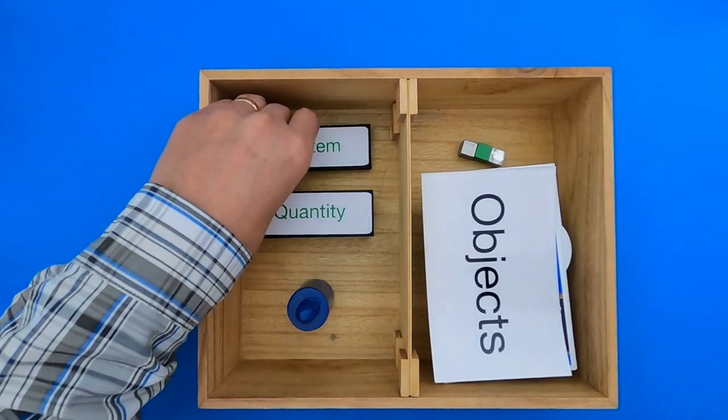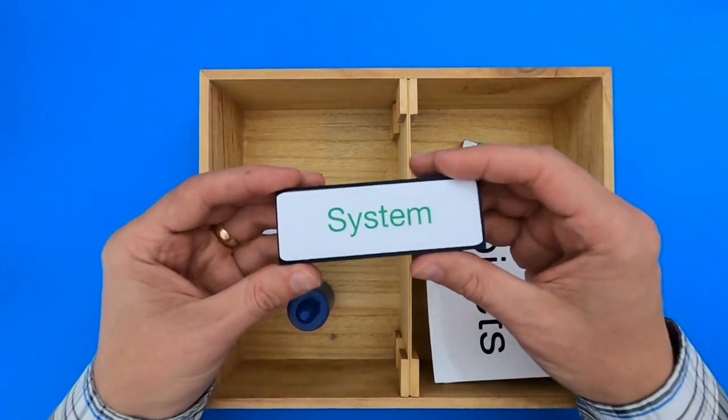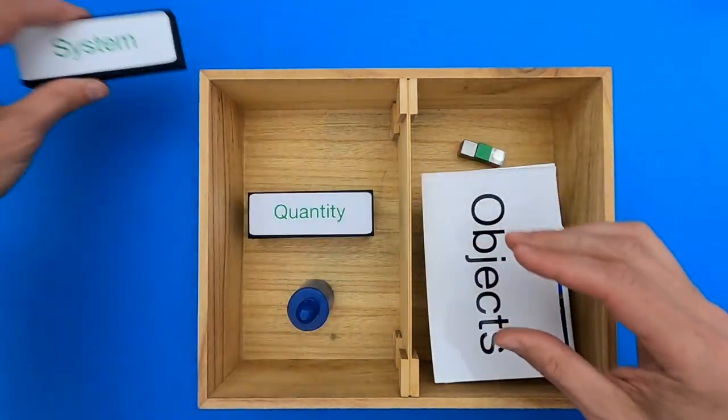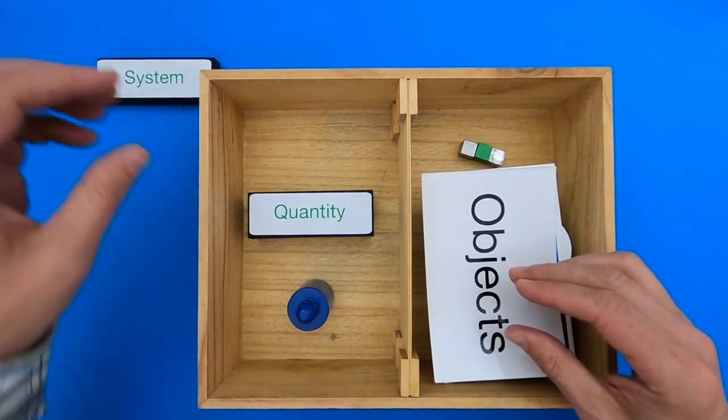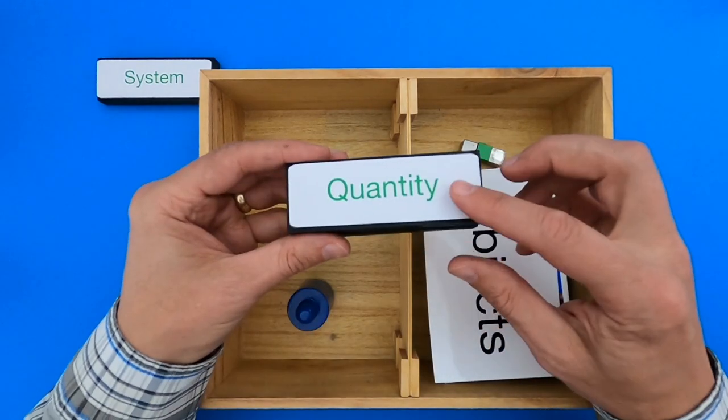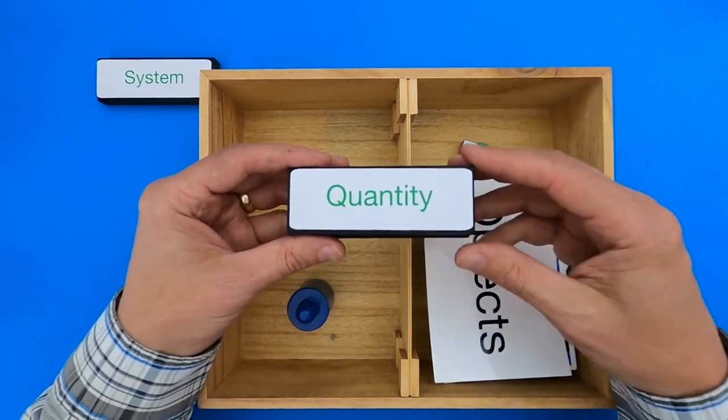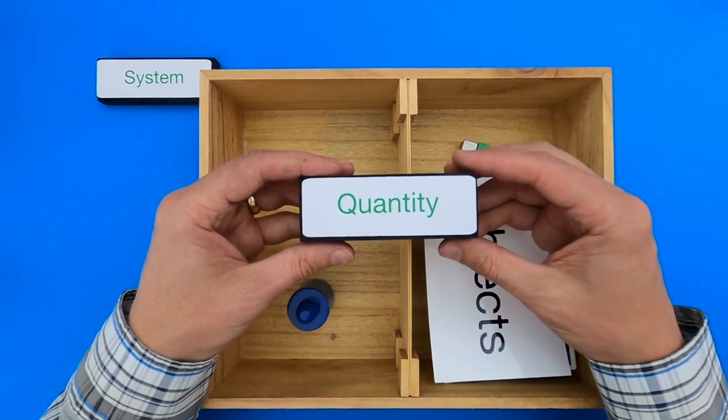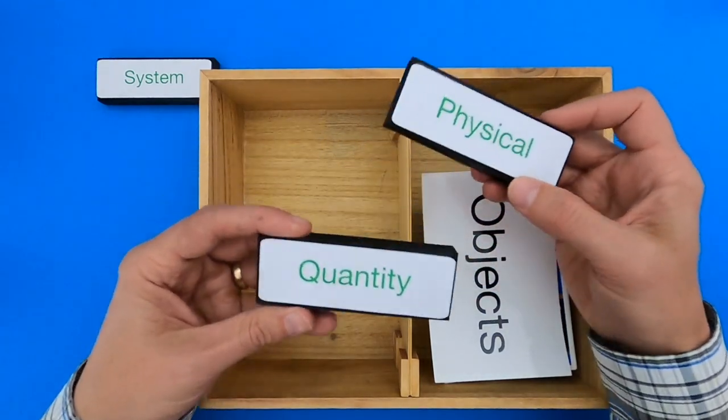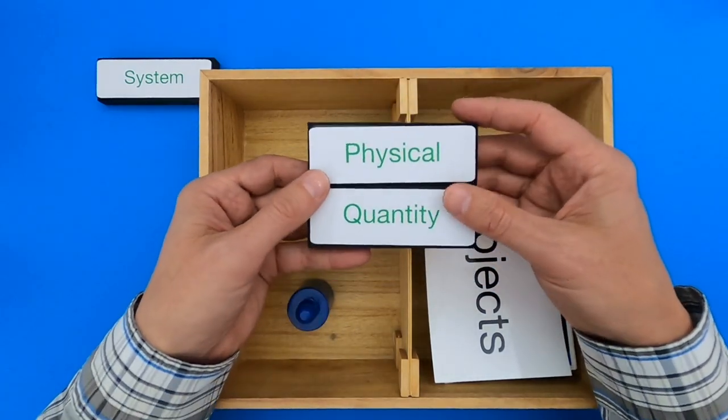When you're starting to measure physical quantities, the first thing you always want to define is what's the system that I'm going to be investigating. You're all probably familiar with a quantity. A quantity is just like a number, so like 1, 2, 3, those would all be quantities. But we're not going to be just talking about quantities today, we're going to be talking about a physical quantity.